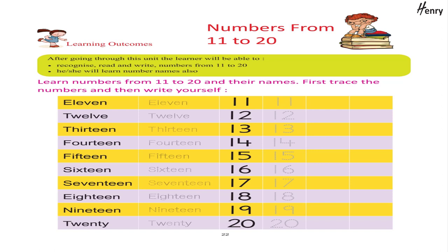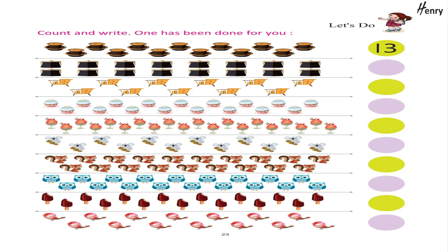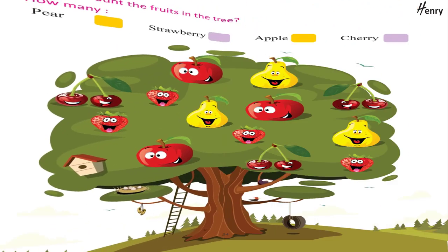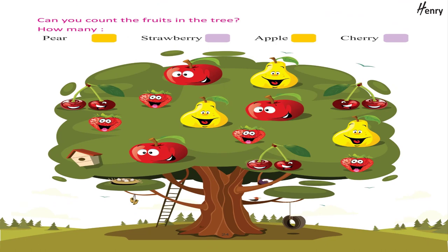Sixteen, seventeen, eighteen, nineteen, twenty. Let's do: count and write — one has been done for you. Can you count the fruits in the tree?